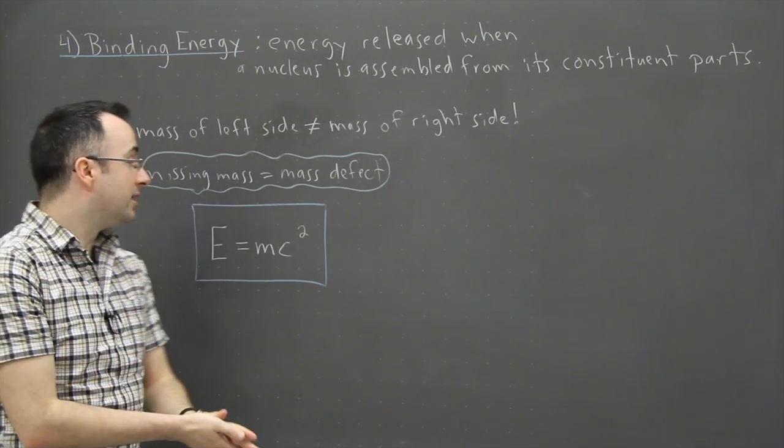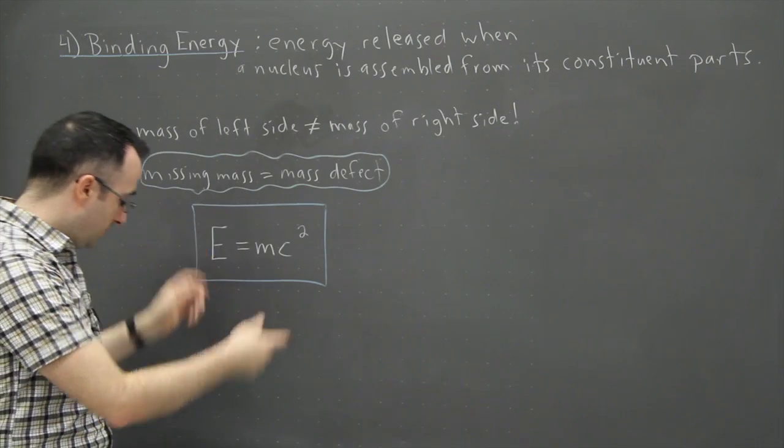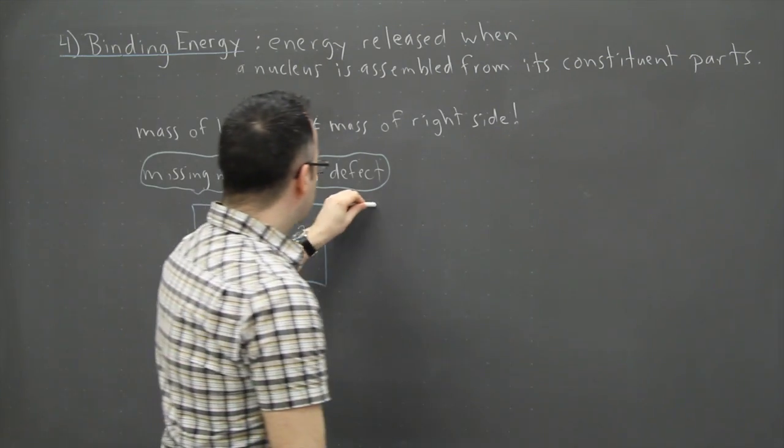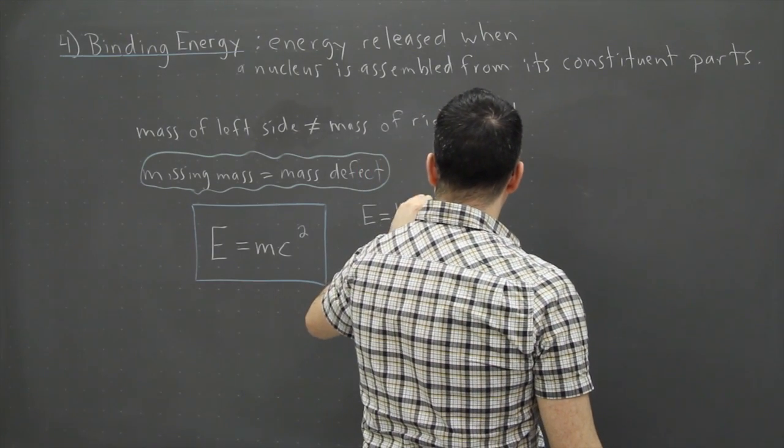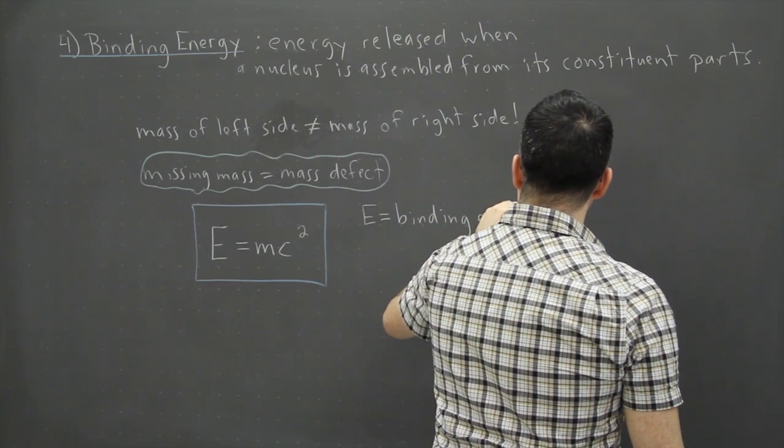And Einstein was very clever clearly. So let's talk a little bit about what this actually means here. E is going to be the binding energy. In other words, the energy released.